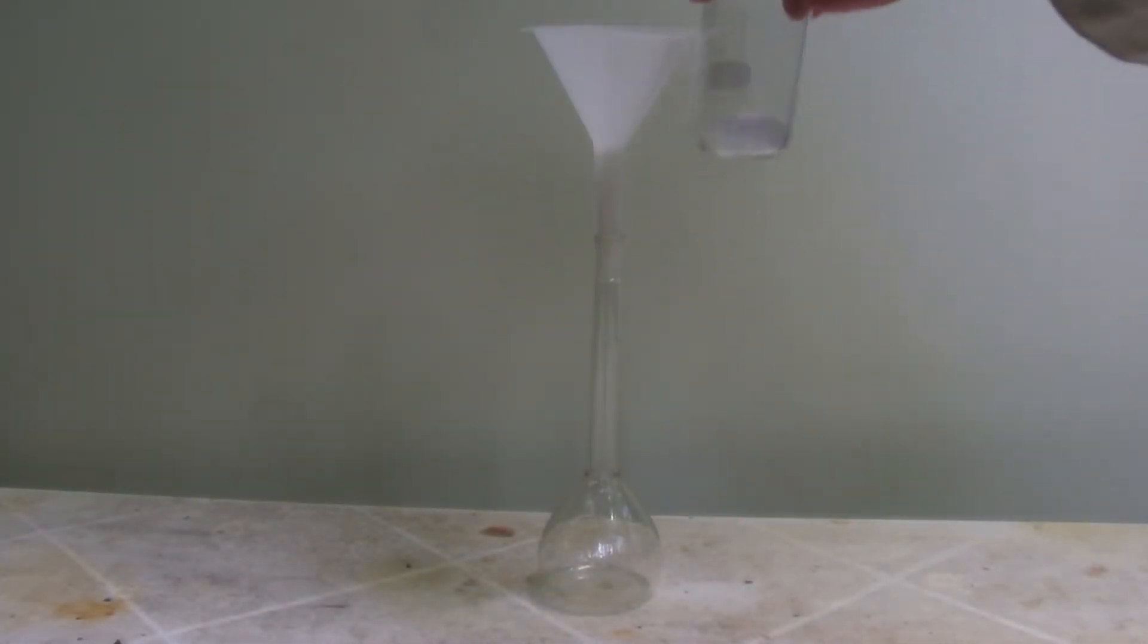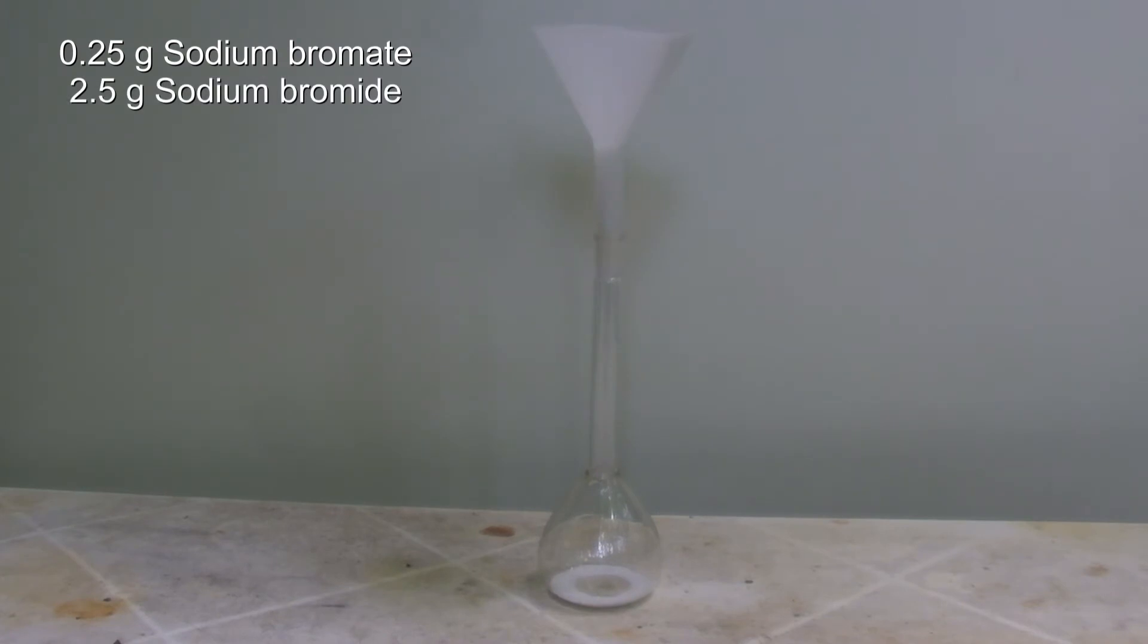A less dangerous option than the preparation with elemental bromine is using a solution of bromide and bromate. For this, 0.25 g of sodium bromate and 2.5 g of sodium bromide are dissolved in 100 ml of distilled water.